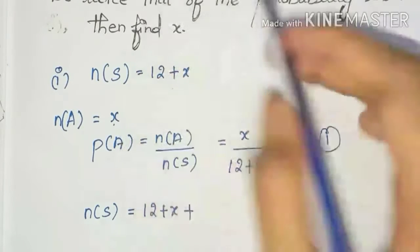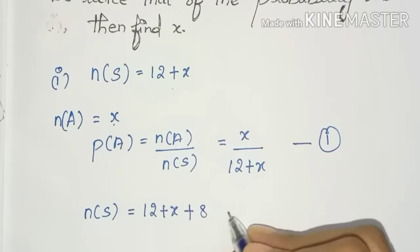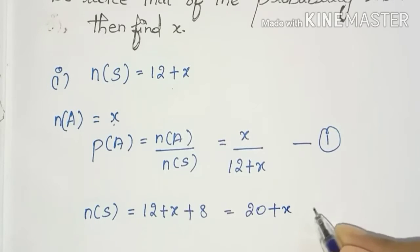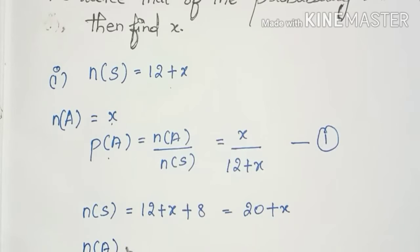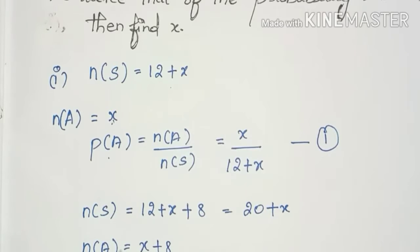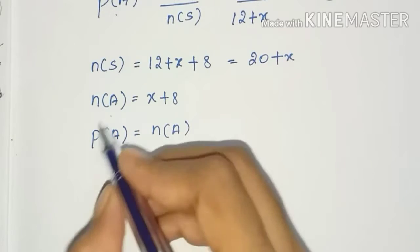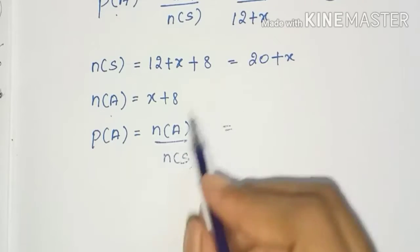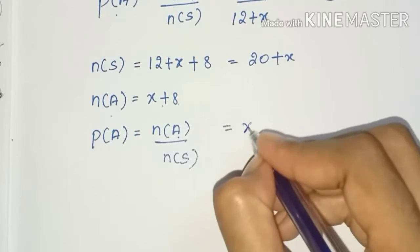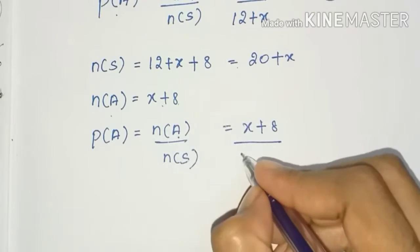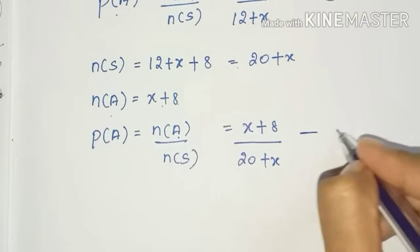After adding 8 extra red balls, 12 plus 8 equals 20, so n(S) becomes 20 plus x. The number of red balls is now x plus 8. So P(A) = (x + 8) divided by (20 + x). This is equation 2.